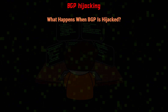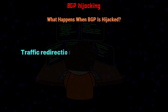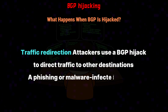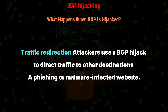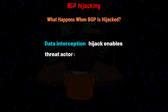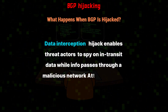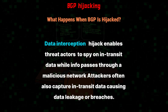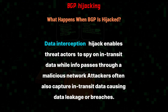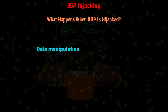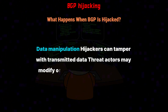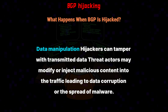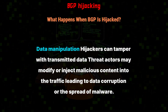What happens when BGP is hijacked? Traffic redirection: attackers use a BGP hijack to direct traffic to other destinations, for example a phishing or malware-infected website. Data interception: a hijack enables threat actors to spy on in-transit data while info passes through a malicious network; attackers often also capture in-transit data, causing data leakage or breaches. Data manipulation: hijackers can tamper with transmitted data; threat actors may modify or inject malicious content into the traffic, leading to data corruption or the spread of malware.